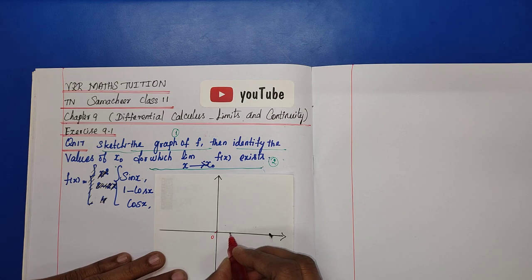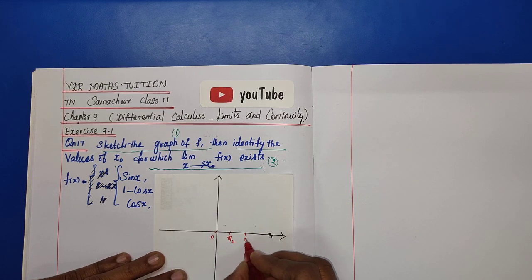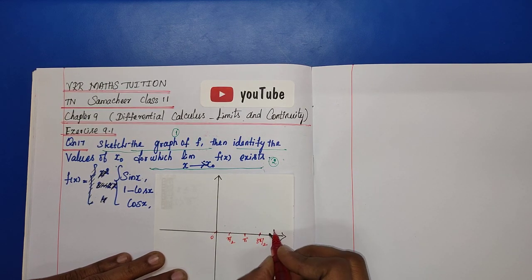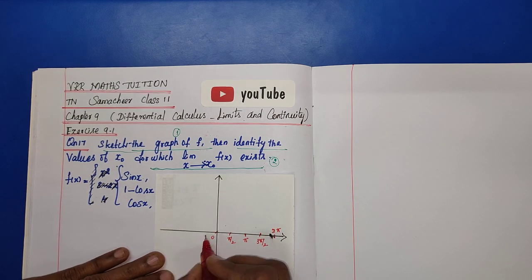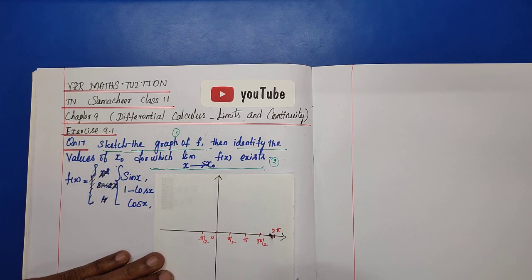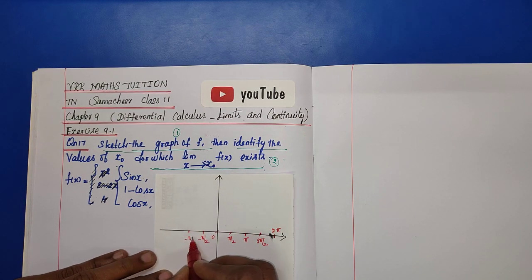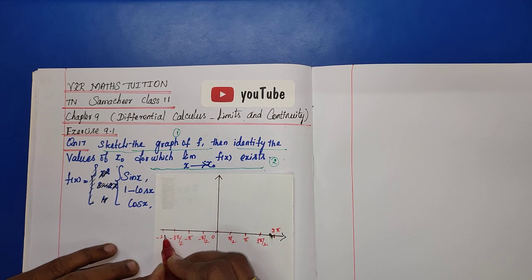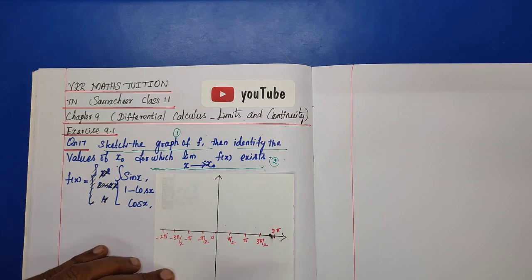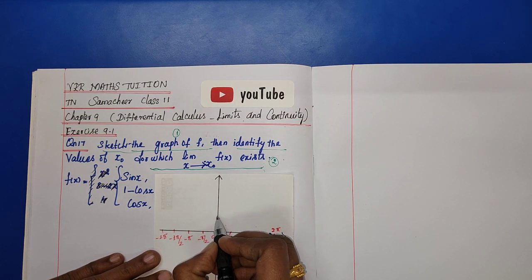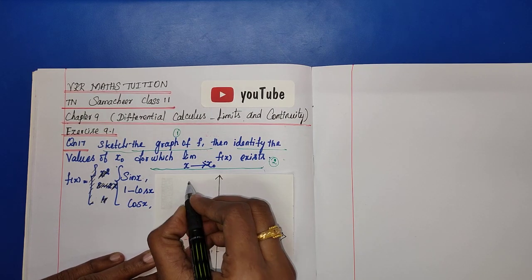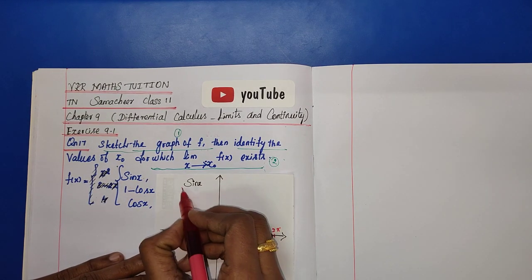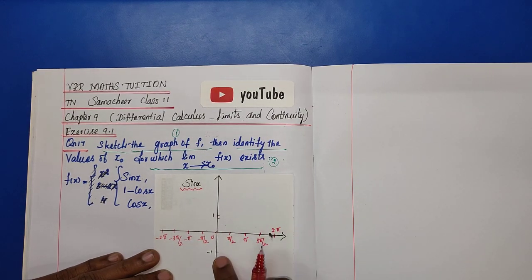Setting up the axes for sin x. On the x-axis mark: 0, pi/2, pi, 3pi/2, 2pi, and on the left side minus pi/2, minus pi, minus 3pi/2, minus 2pi. On the y-axis mark plus 1 and minus 1. Now we draw the graph of sin x.